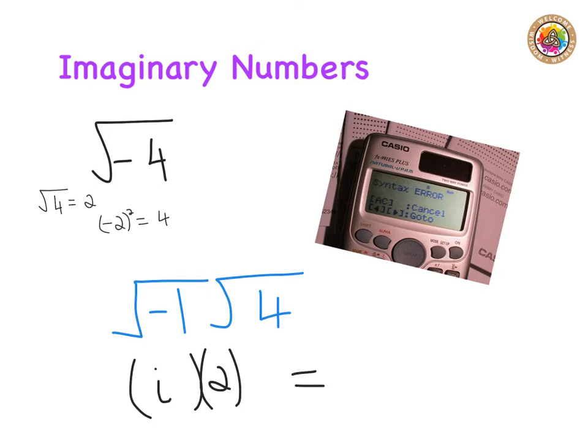So actually the square root of minus four is going to be equal to two i. That's basically where our imaginary numbers come from, from the impossibility of finding the square root of a negative number.